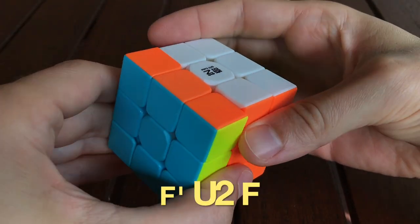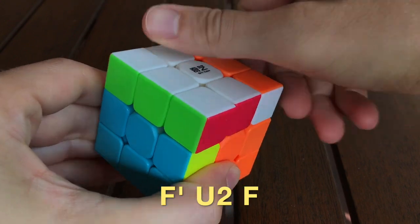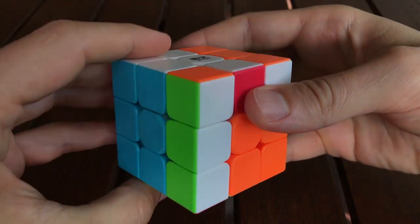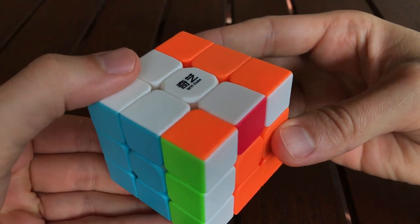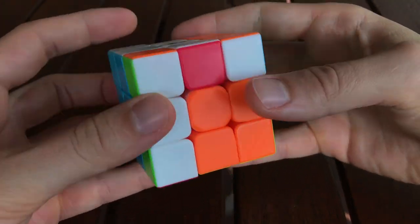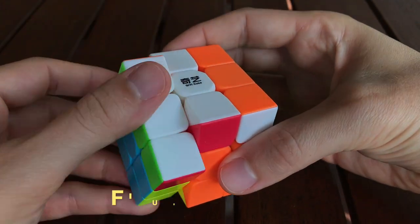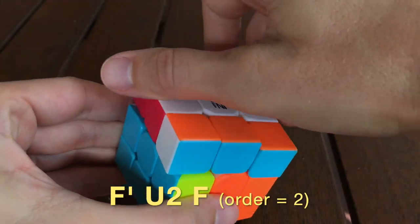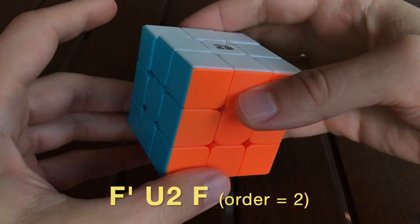So the sub-algorithm for this commutator is F' U2 F. And if you notice, it just switches those three pieces on the front right edge and the back upper edge. And if we repeat it, it fixes itself. So that means it has order 2.